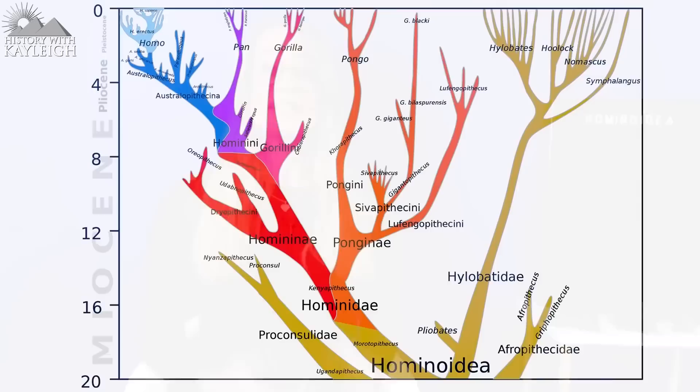So let's start by putting this picture on screen. This is the evolutionary tree of life of humans or Homo sapiens, chimpanzees, gorillas and orangutans.